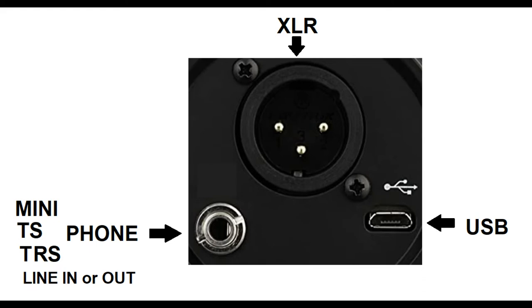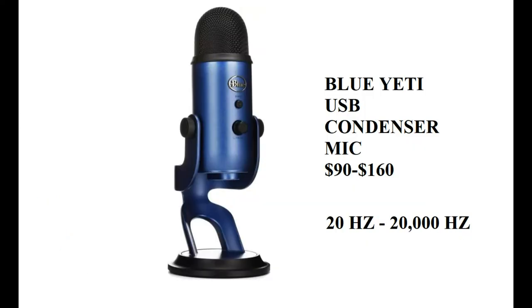The big one at the top is the XLR with three connectors — that's used for mixing boards and preamps. The one we're going to be dealing with today is the one on the lower right, which is the USB connector. We're going to be dealing with mics that connect directly to your computer.